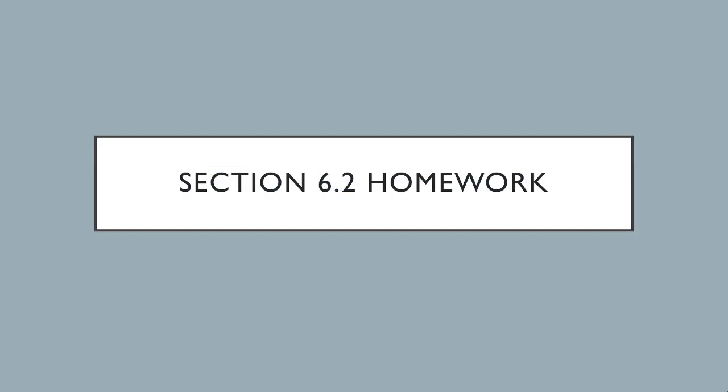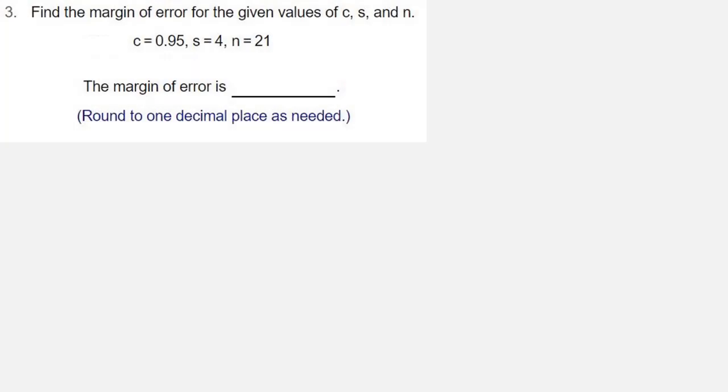We're looking at homework from section 6.2. This is question number 3. Find the margin of error for the given values of C, S, and N. C is 0.95, S is 4, and N is 21.